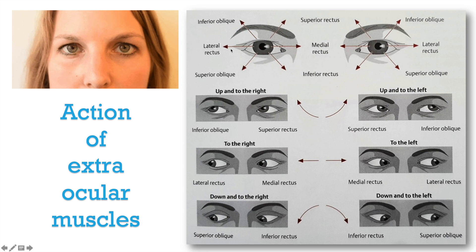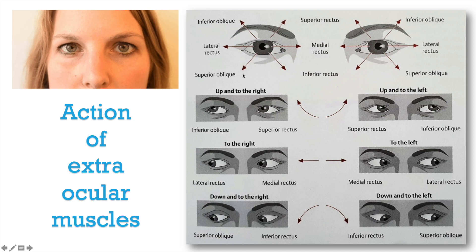The muscles that elevate the eyeballs are superior rectus and inferior oblique. For depressing the eyeballs downwards, there are two muscles involved: inferior rectus and superior oblique. For adduction of the eyeball there are three muscles, and for abduction of the eyeball there are three muscles. Elevation: two muscles; depression: two muscles; adduction: three muscles; abduction: three muscles.